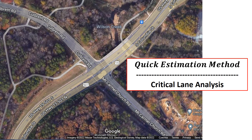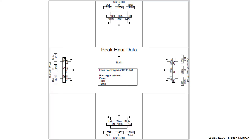We're going to look at an application of the quick estimation method using critical lane analysis for an intersection in Chapel Hill, North Carolina. We're going to use the peak hour data to perform the capacity analysis with this quick estimation method.